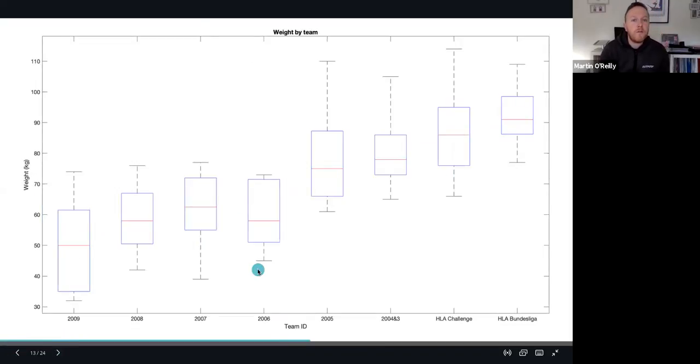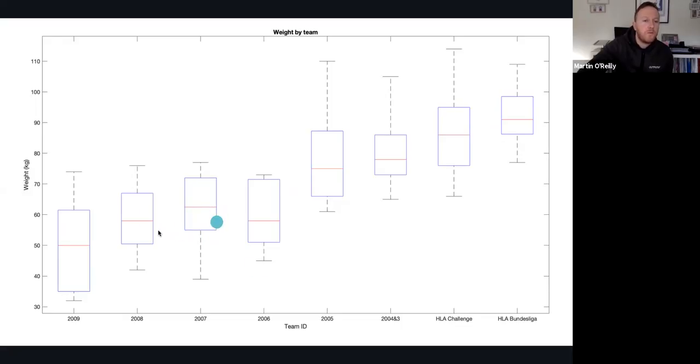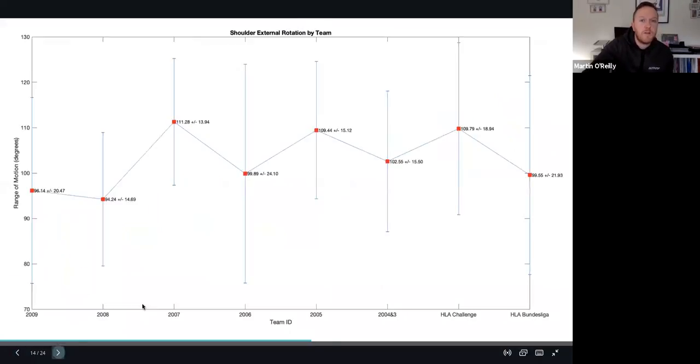This is the box plot formation. Interestingly it's almost as if you can split it into two groups, the players born before 2006 over here and the players after seem to have very clear trends in weight as would be expected with increased gym training and maturation of the players.